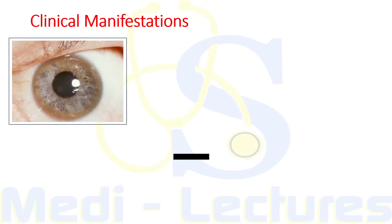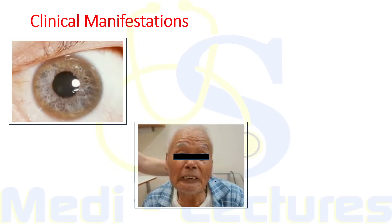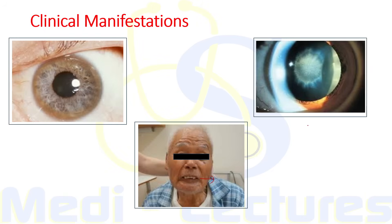Copper deposition in the pancreas can lead to pancreatitis; it can also cause cardiomyopathy and rarely osteoarthritis. This is the typical Kayser-Fleischer ring in Wilson's disease - usually requiring slit lamp examination but in some cases visible on naked eye. The typical dystonia known as risus sardonicus can be seen in Wilson's disease, tetanus, and strychnine poisoning. Slit lamp examination can also demonstrate sunflower cataract.